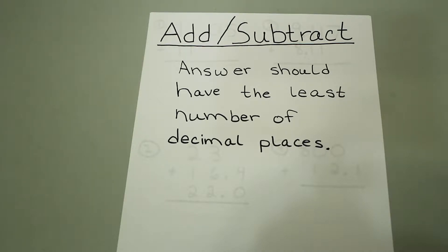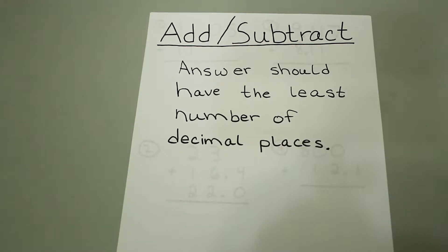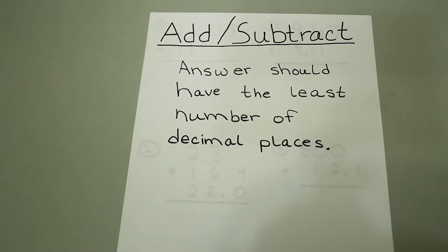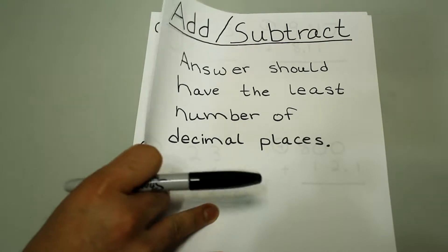When you add or subtract, you don't necessarily have to worry about significant figures. Rather, you are more concerned with how many decimal places the numbers that you are adding have. The answer should have the least number of decimal places. So let's do some examples and hopefully that clarifies.